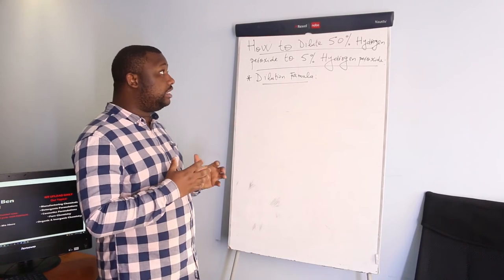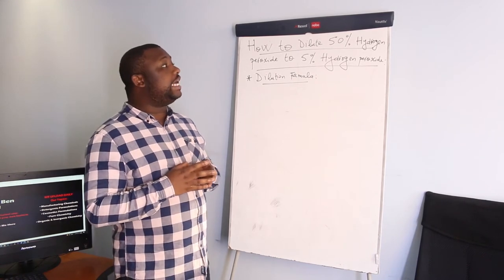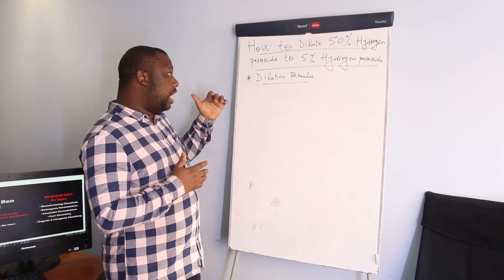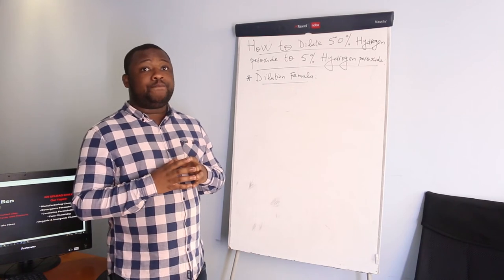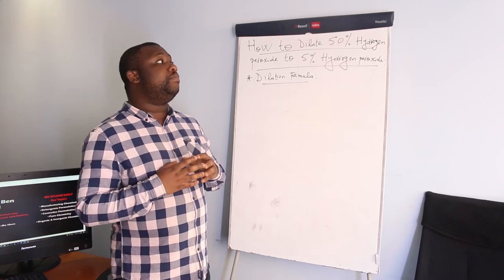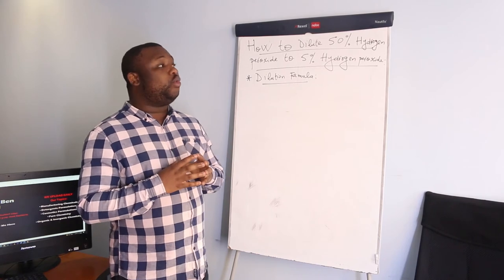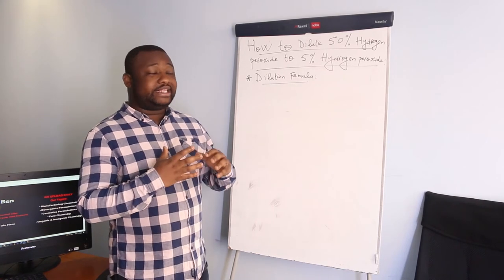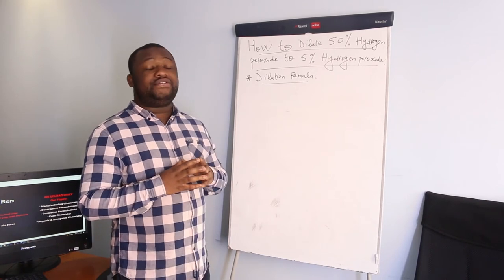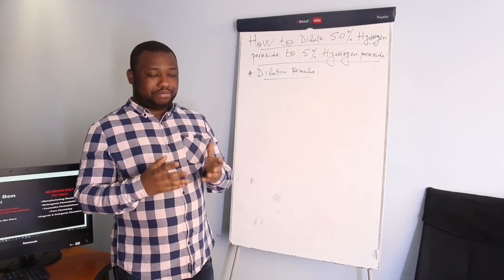I'll show you in full detail how to dilute 50% hydrogen peroxide to 5% hydrogen peroxide. I'll take you through the dilution formula, and then show you how to actually make 10 liters of 5% hydrogen peroxide from 50% hydrogen peroxide.